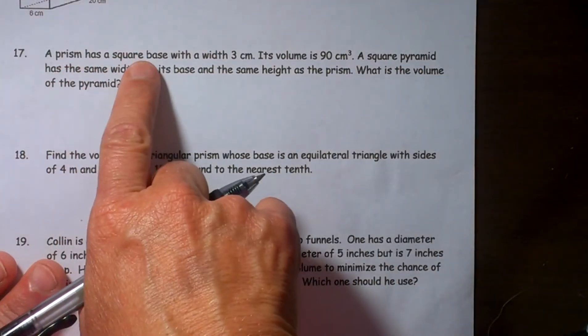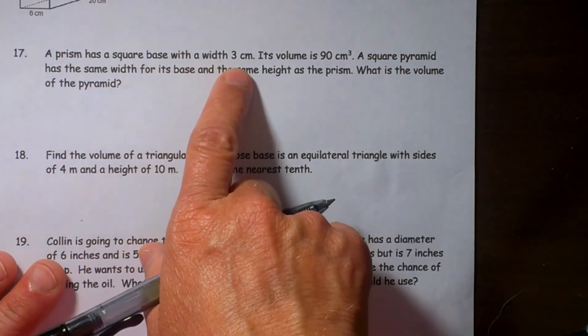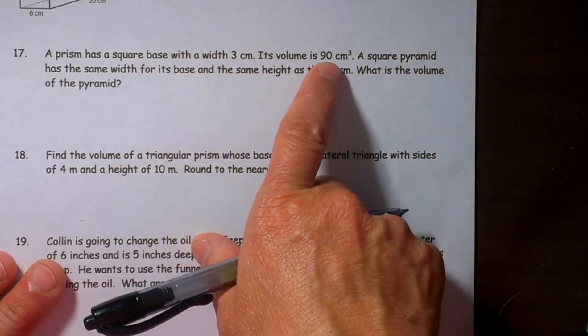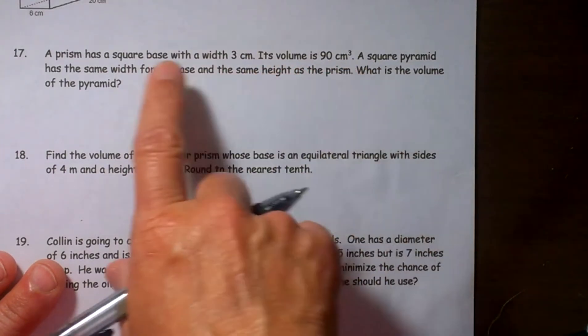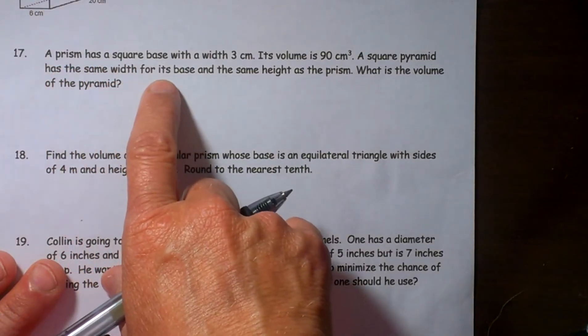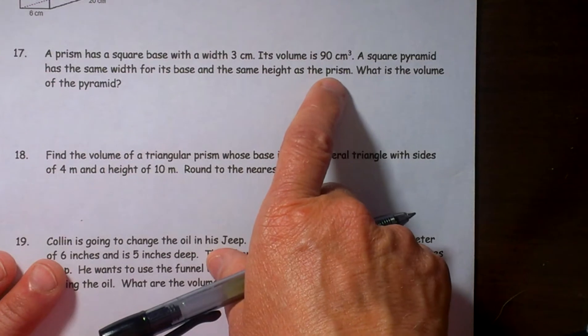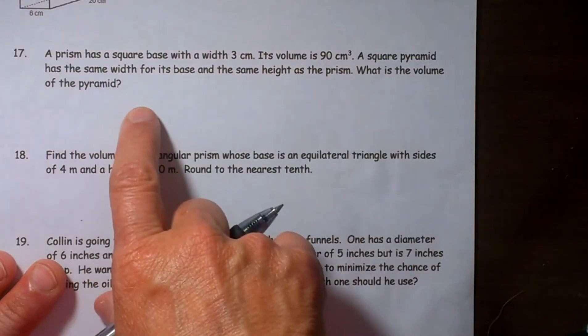It says a prism has a square base with a width of 3. The volume is 90 cubic centimeters. A square pyramid has the same width for its base and the same height as the prism. What is the volume of the pyramid?